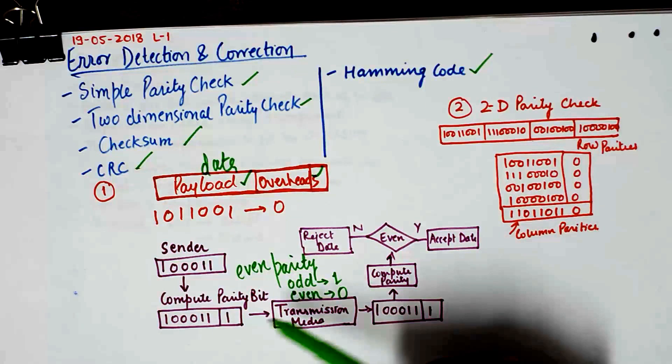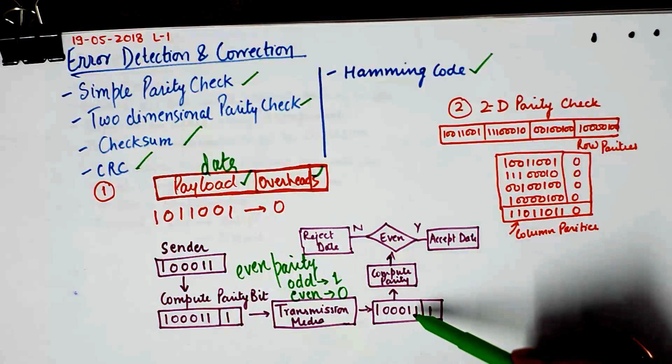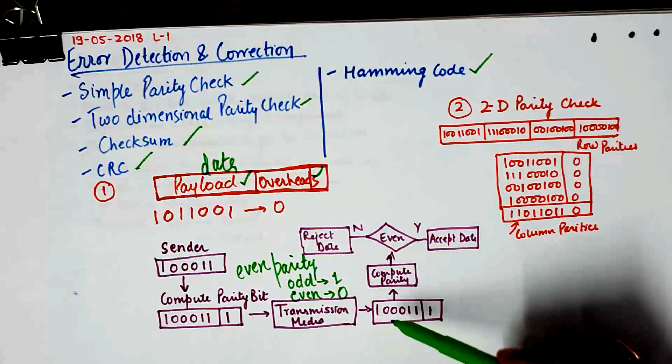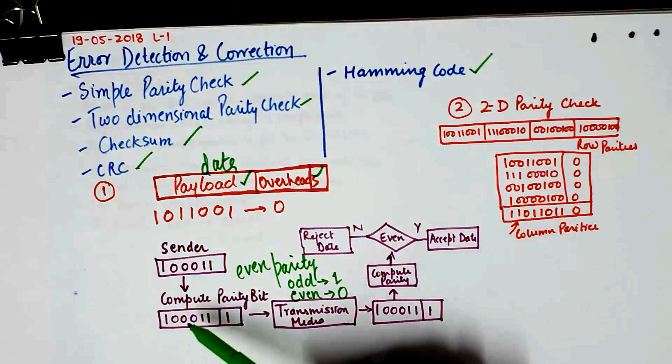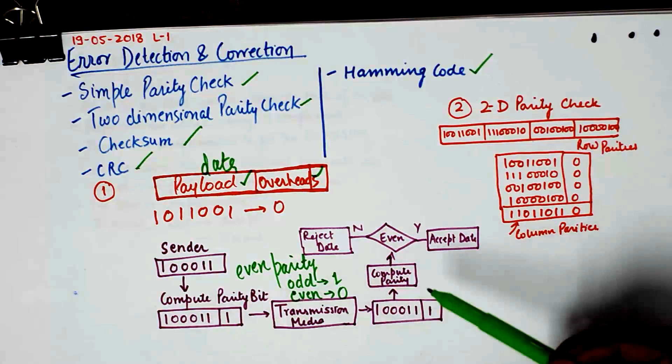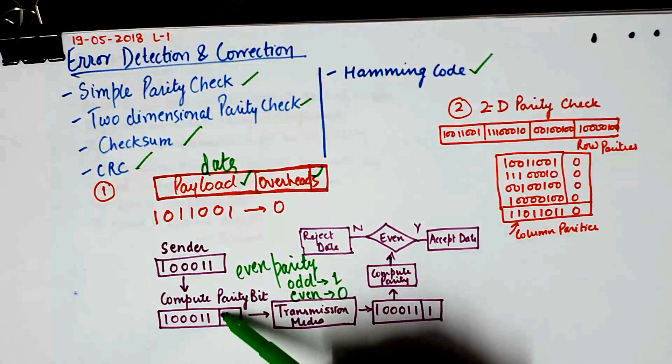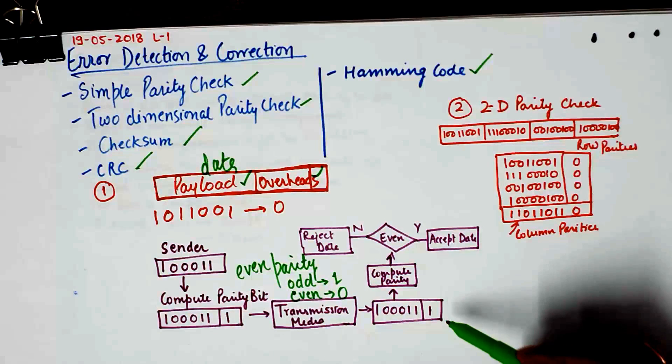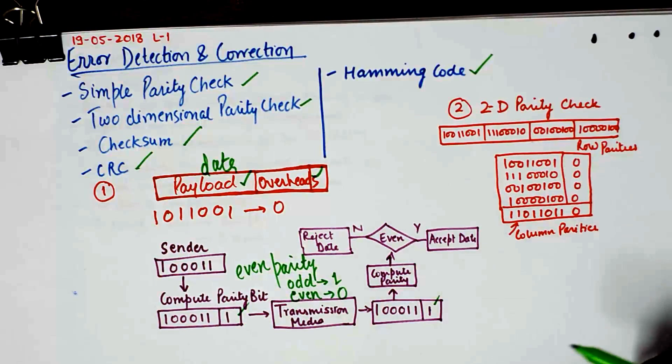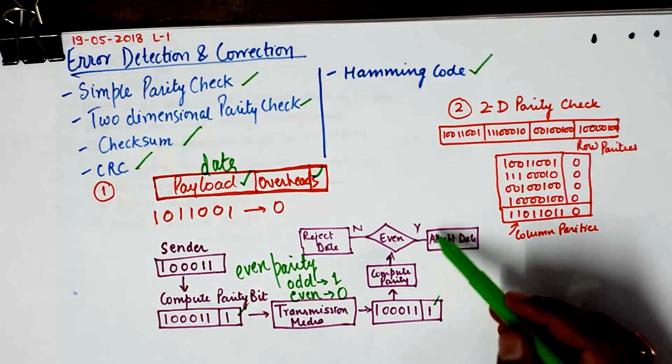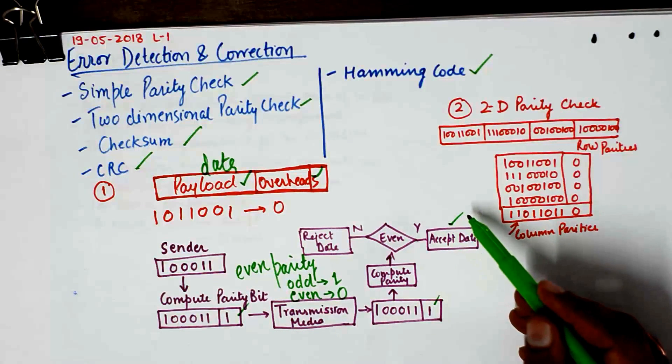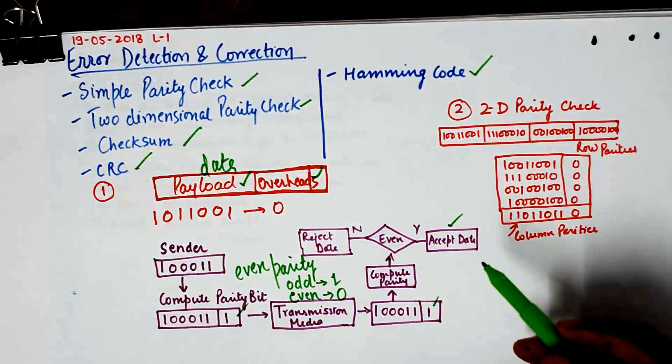Now as you can see, no error is introduced in the transmission. So we did send 1 0 0 0 1 1. We received 1 0 0 0 1 1. The parity was computed as one here and the parity is computed as one here also. So the receiver will accept the data assuming that it has correctly received it.